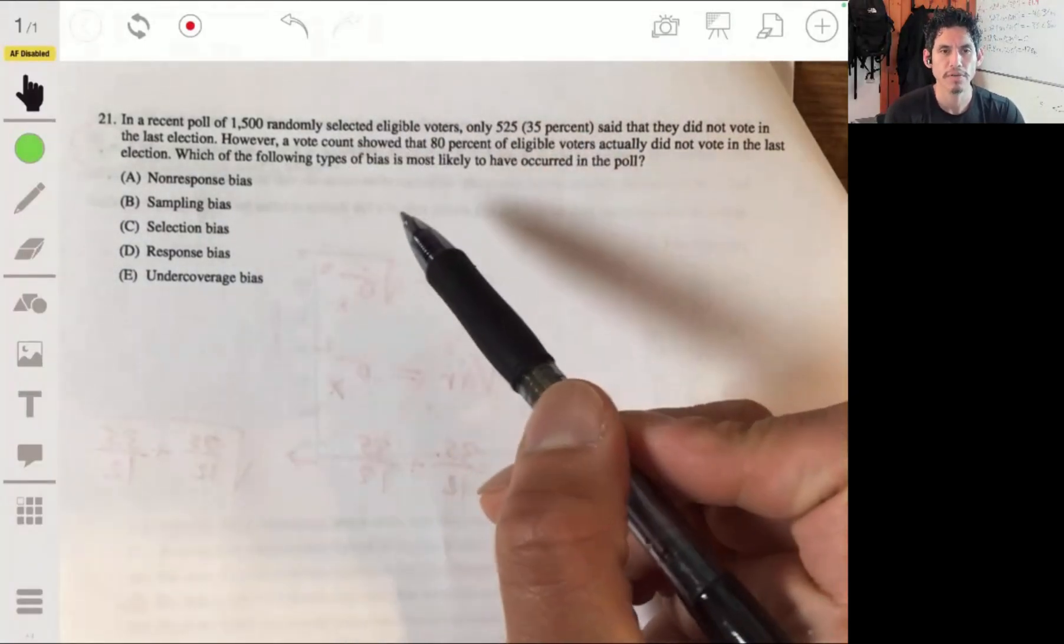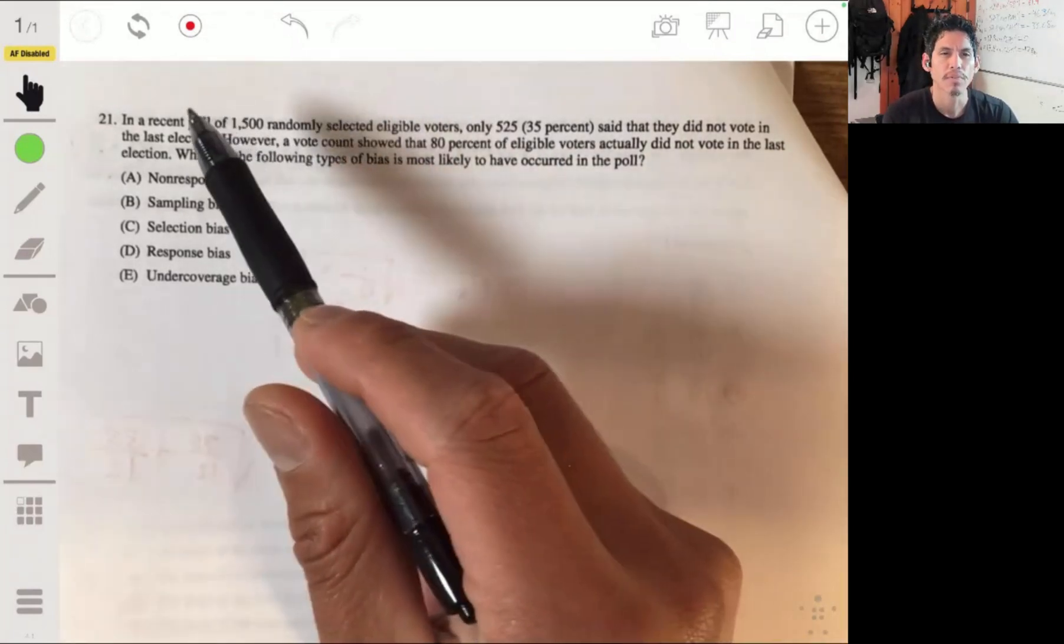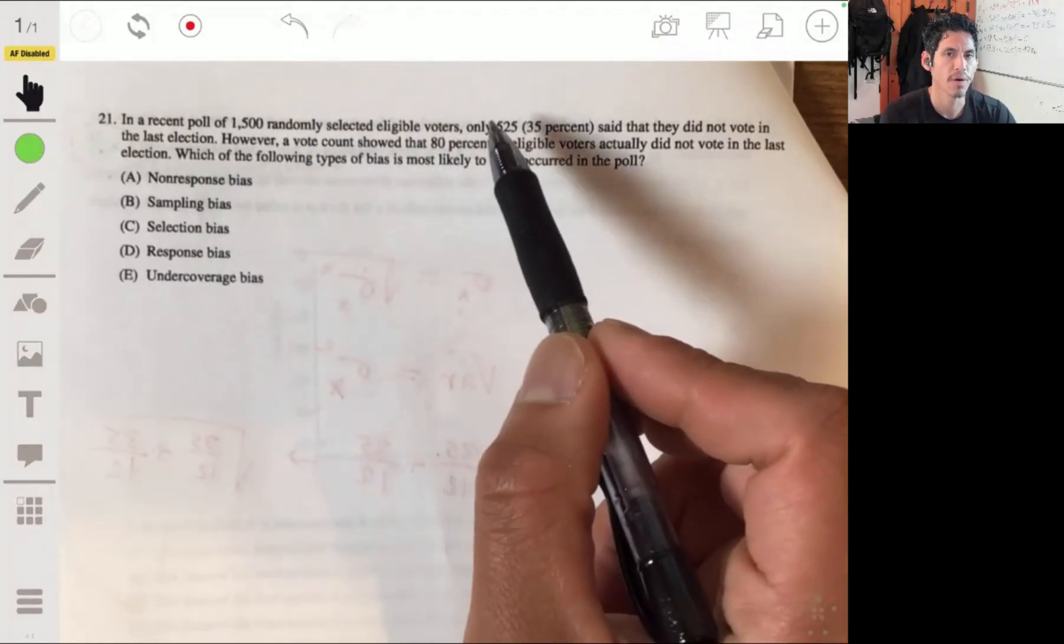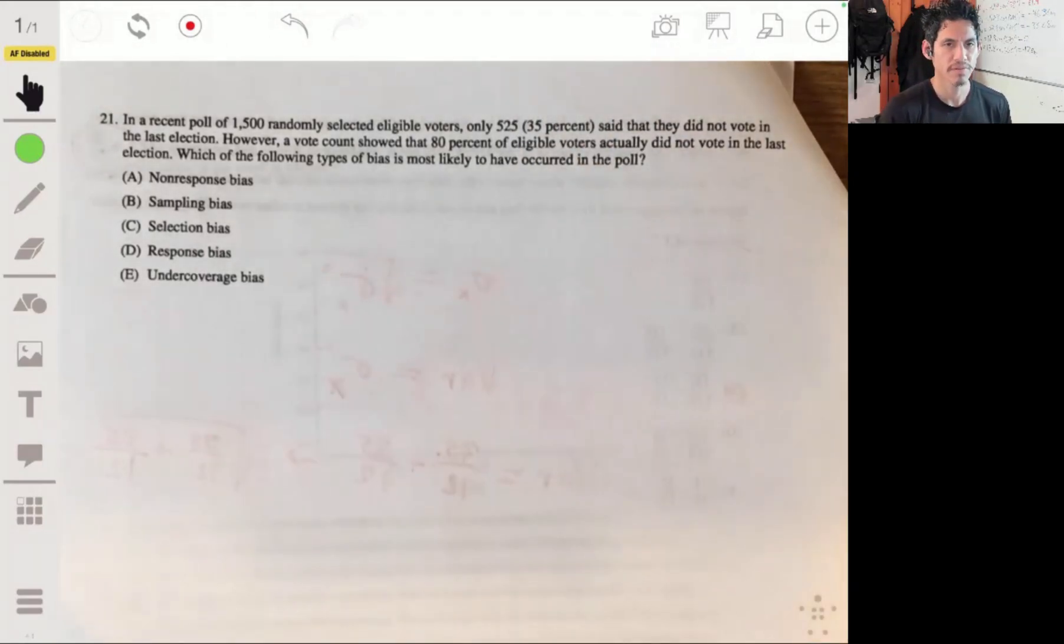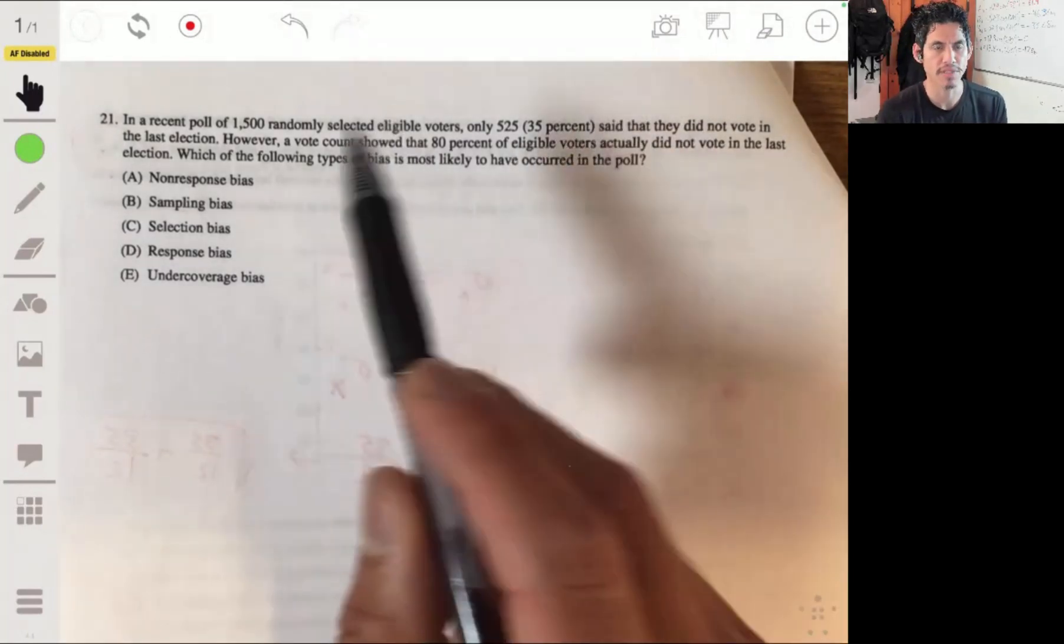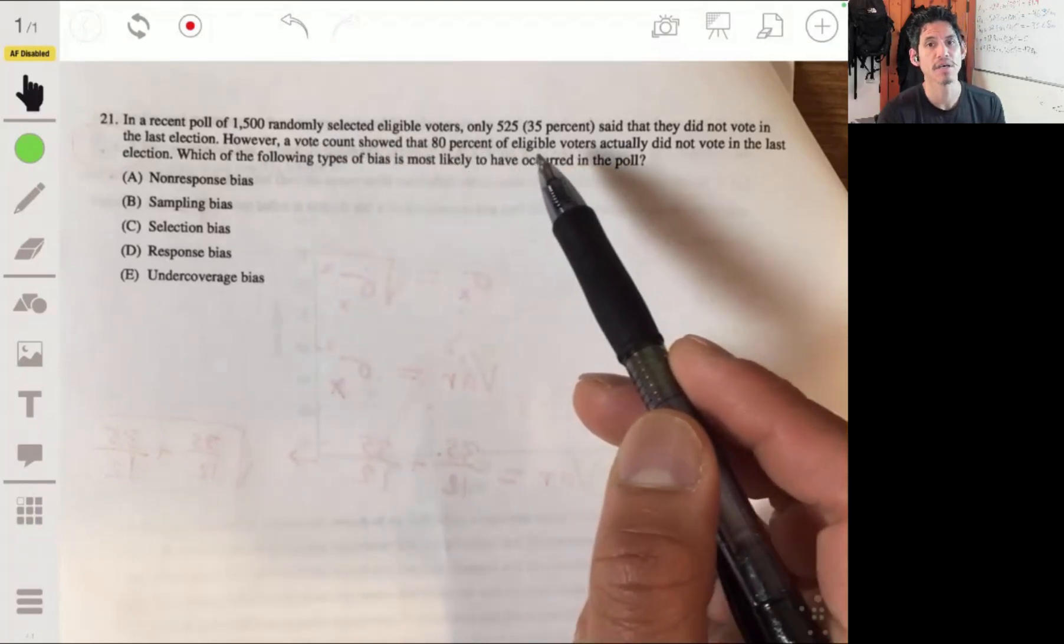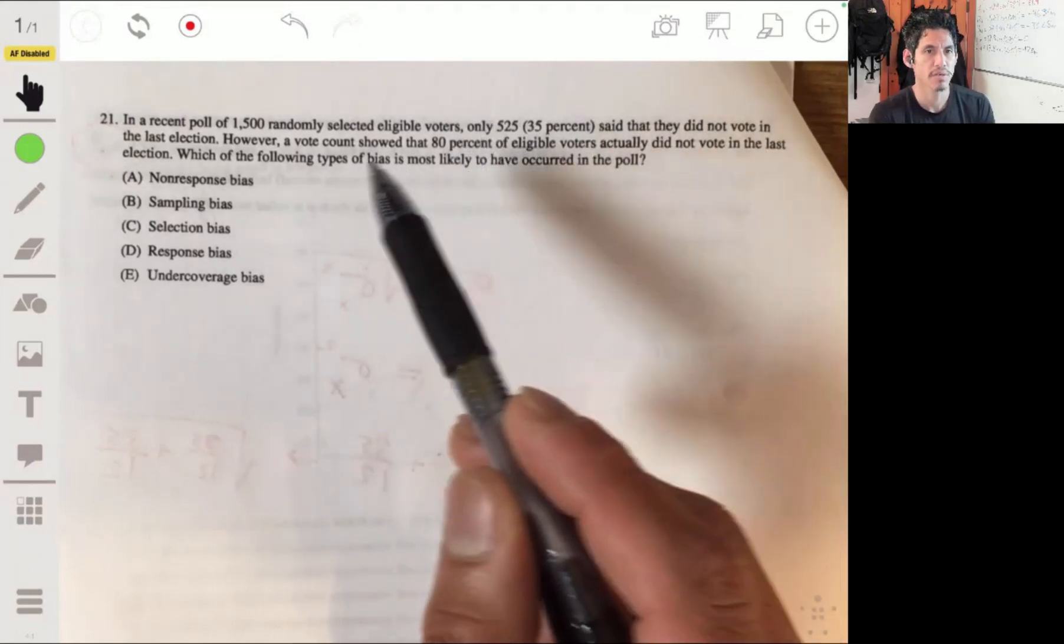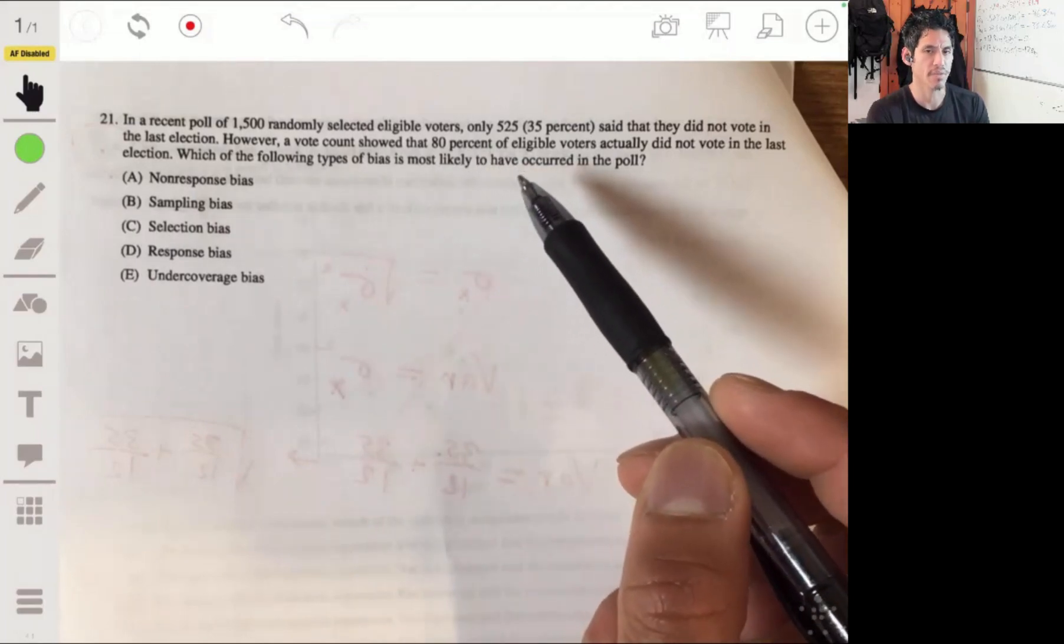Alright, picking up on problem 21 from the 2017 practice exam. We've got a recent poll of 1,500 randomly selected eligible voters. Only 525, or 35%, said they did not vote in the last election. However, a vote count showed that 80% of eligible voters actually did not vote. Suspicious. So which of the following type of biases is most likely to have occurred in the poll?